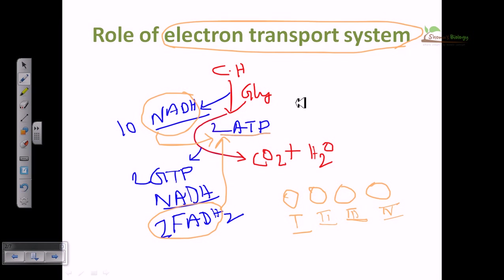So right after glycolysis and the Krebs cycle — which are a tedious job of producing all these energy-rich molecules — we are not directly producing the energy currency ATP. But now it's time to convert these energy-rich molecules into ATP, and that can be done only with the help of the electron transport system. That's why the electron transport system is very important inside the cell.